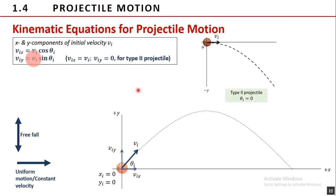For Type 2 projectile, the x component of the initial velocity is also the initial velocity itself since the initial angle of flight is 0. And the y component of the initial velocity is automatically 0. The position of a projectile, as a function of time t, is described by its x and y coordinates x sub f and y sub f, respectively.